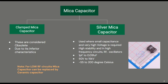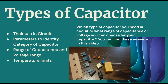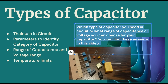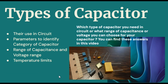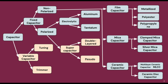How do you know which type of capacitor is needed to use in your circuit and where? Or what value of capacitance range or what range of voltage you can choose for your capacitor? You can find these answers here. Generally there are two main types: fixed and variable capacitors.